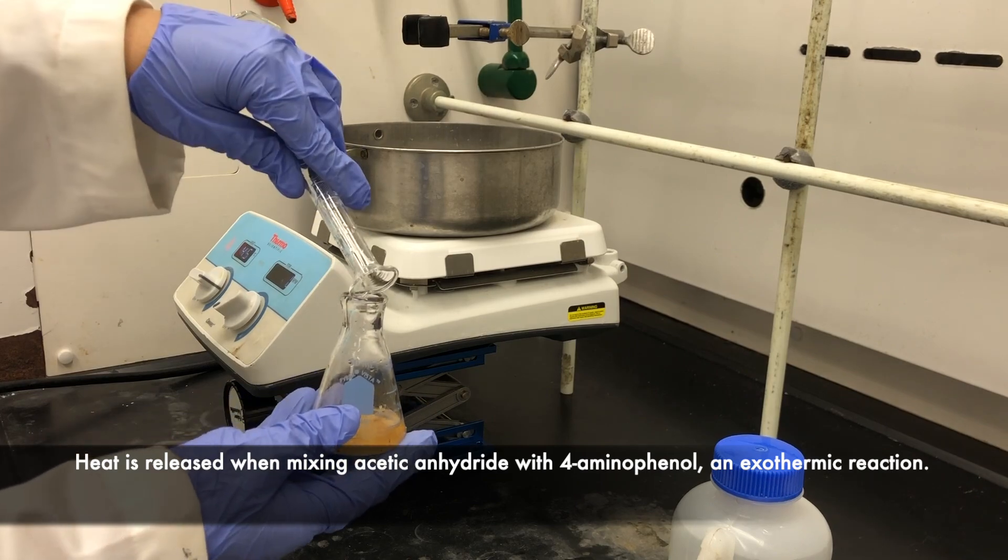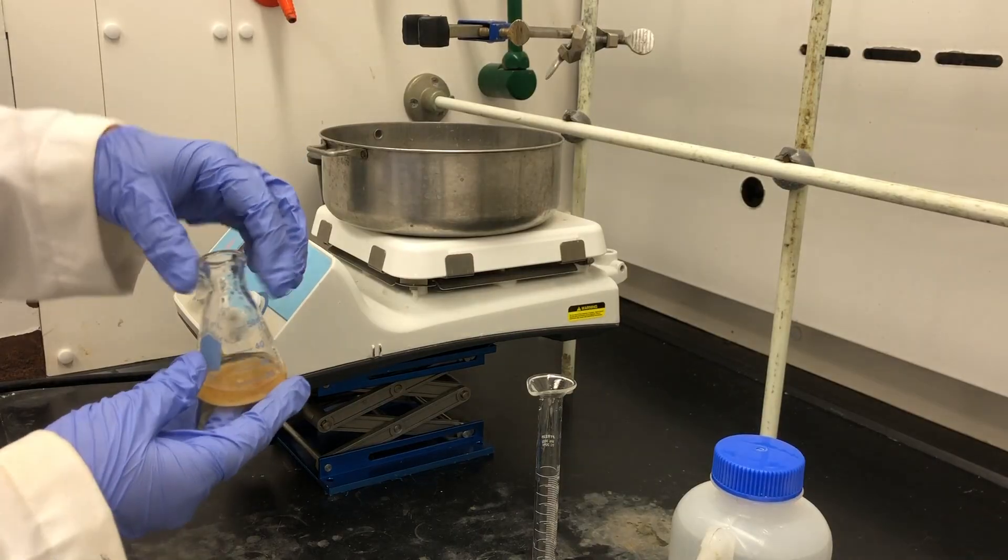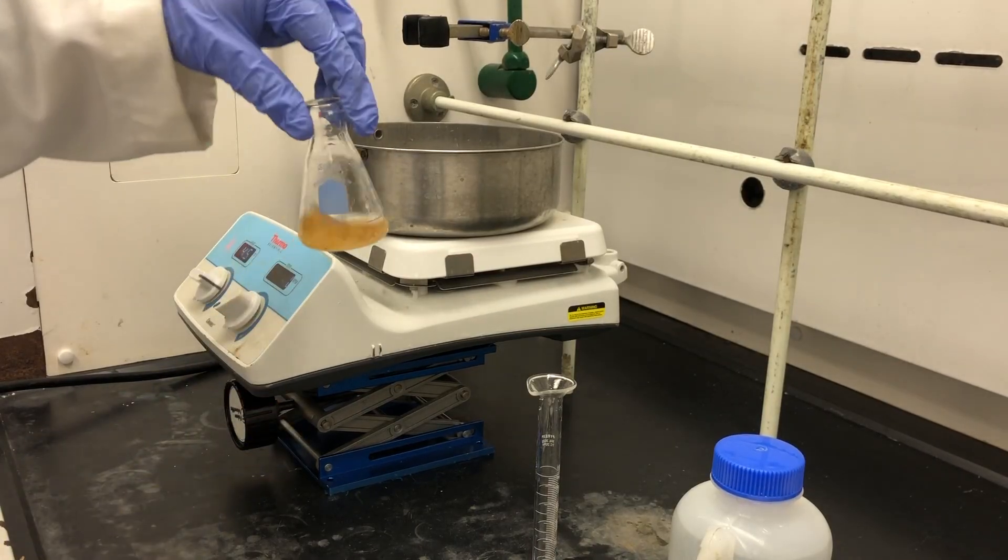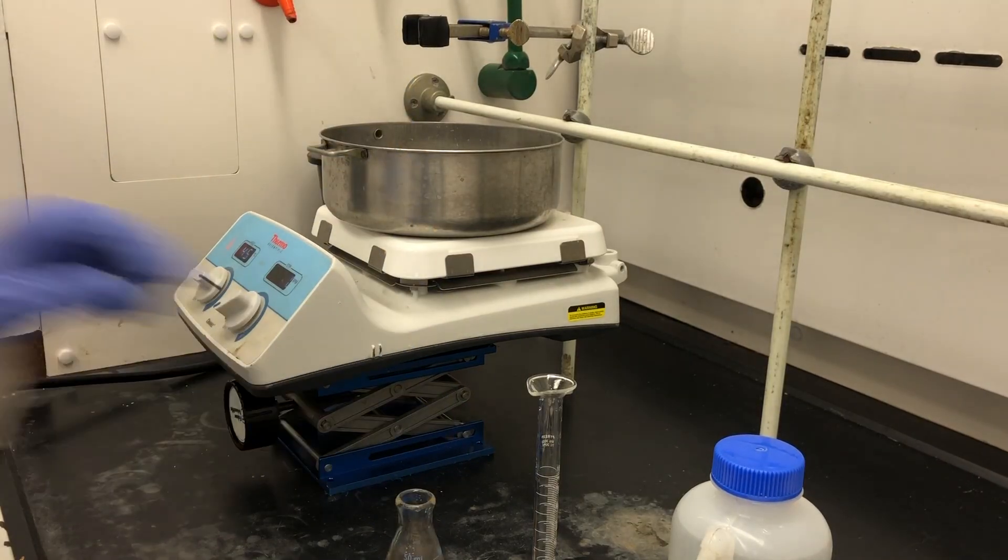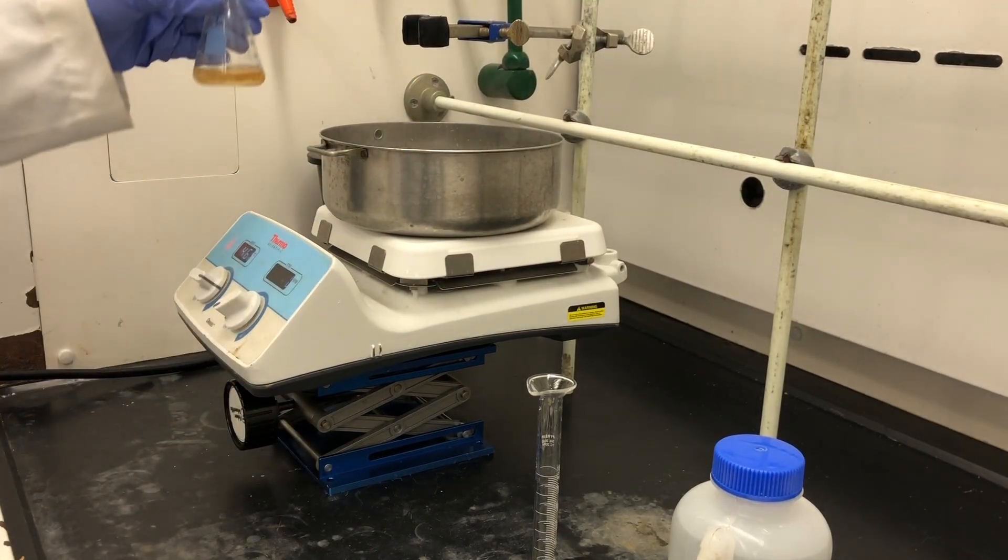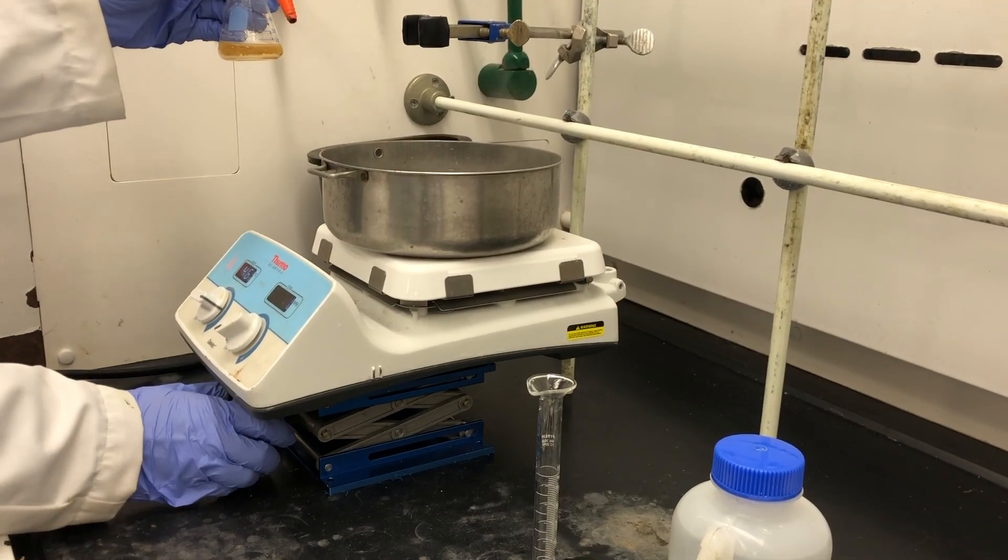Now what we'll need to do is put it in the hot water bath by clamping it on the clamp. We're going to add the stir bar to gently stir it. I can take the flask and clamp it. What you want to do at this point is definitely lower the jack so you're away from the hot water.